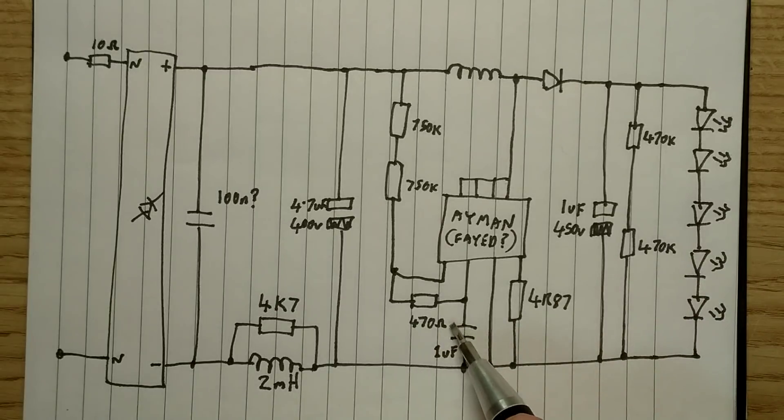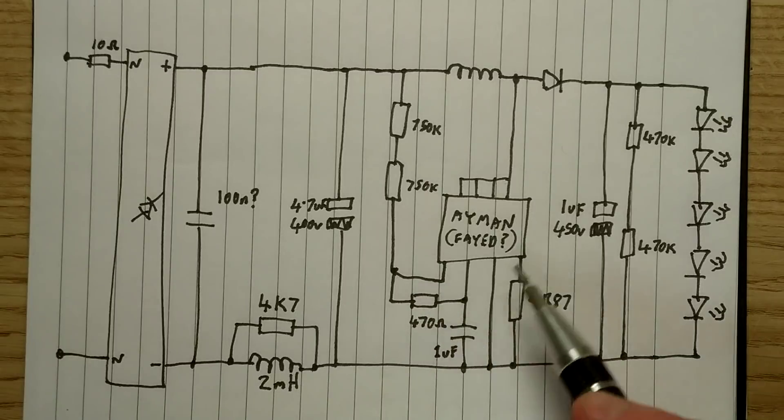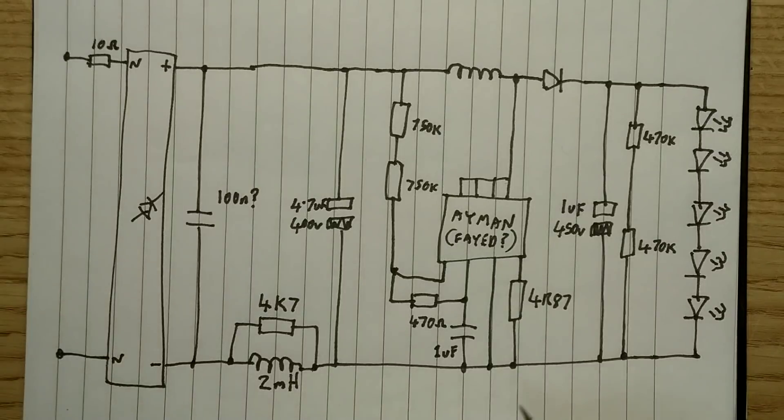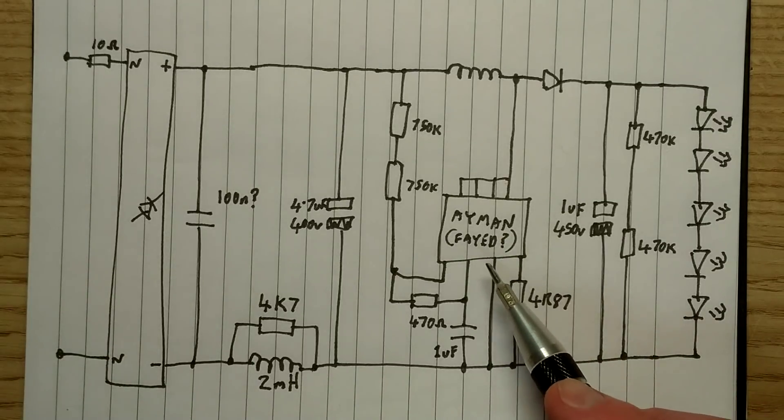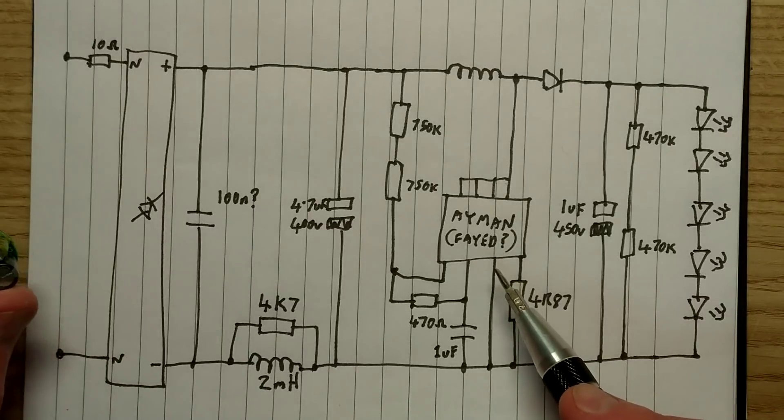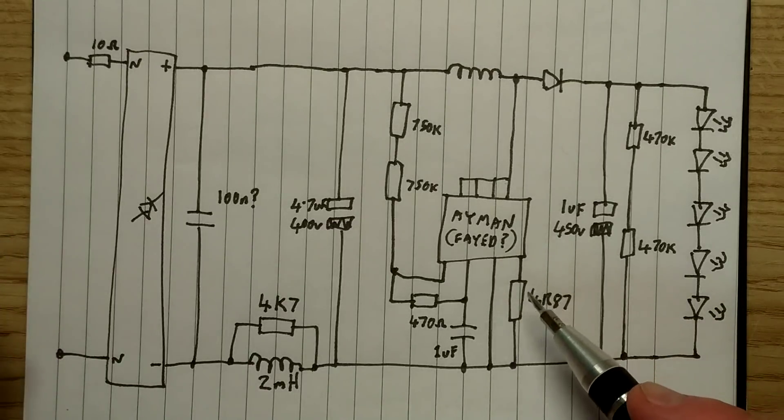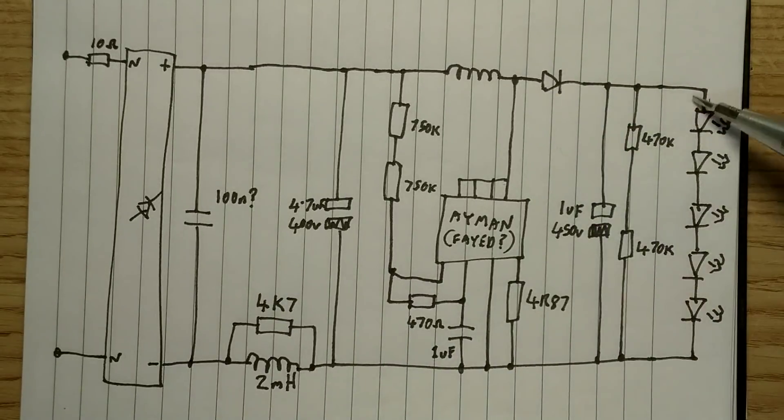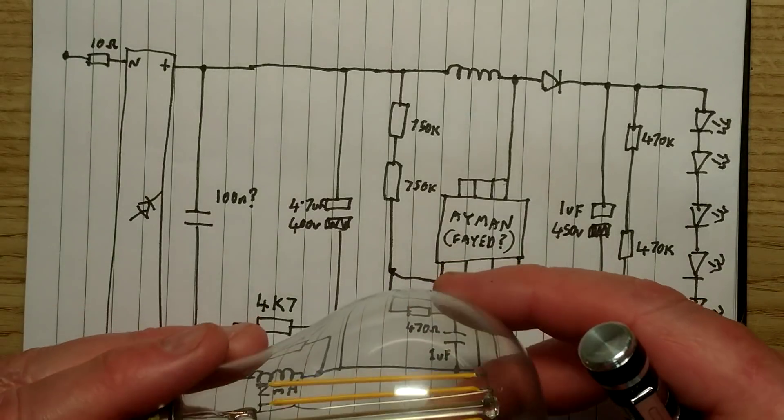And that just about covers it. This 470 ohm resistor, I think that's just part of the power supply circuitry. I don't know, A-Y-M-A-N-F-E-E-D, if that's what that chip is, if it's a chip he designed and they just stuck his name on it, which is nice. So there we go, it is a buck converter, it's actually boosting the voltage up, and that then lights the LEDs, which I've got quite a lot in series at that higher voltage.